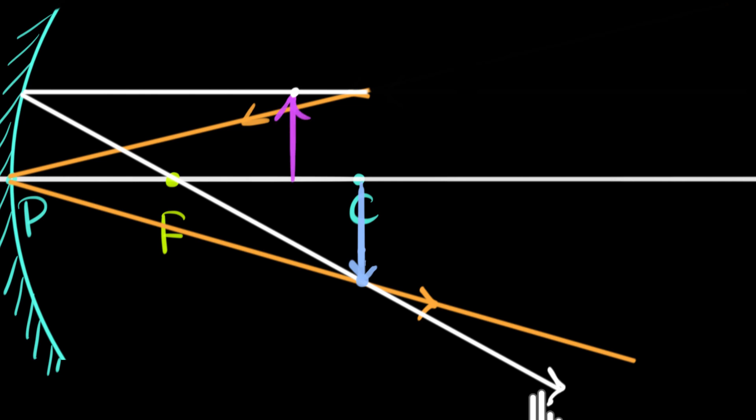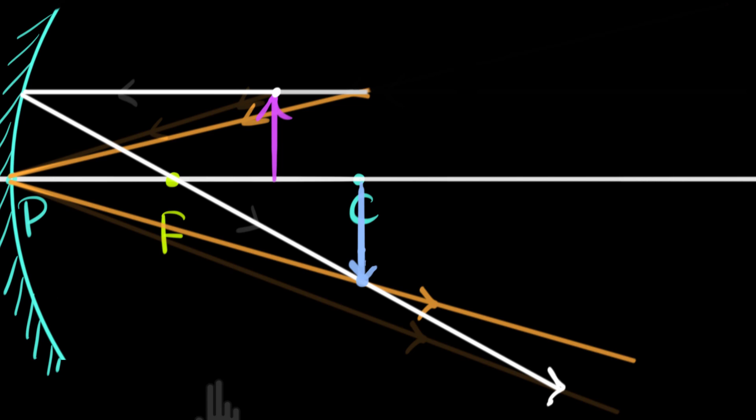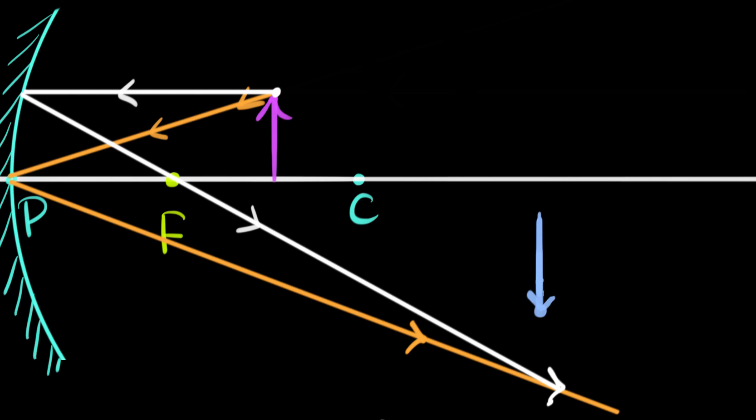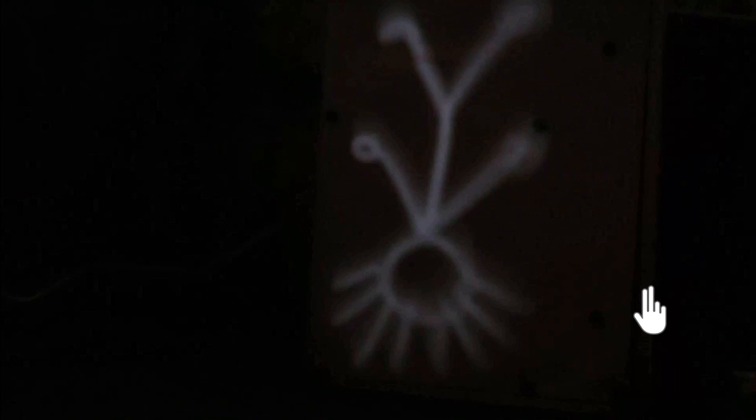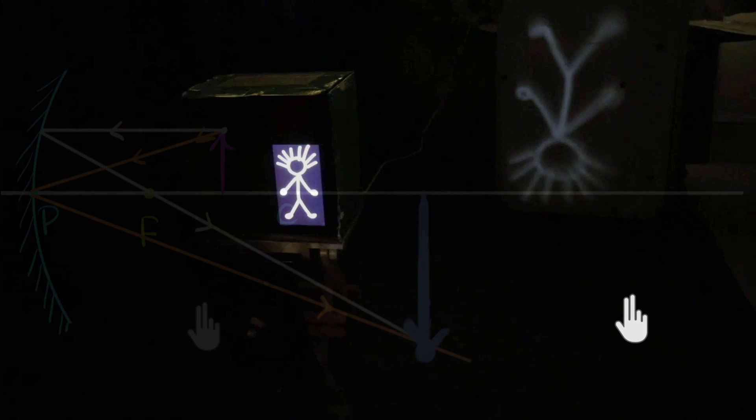Let's bring the object even closer, placing it between F and C. Drawing the ray diagram, all the reflected rays intersect somewhere beyond C. So the image will be beyond C and humongous in size. In the physical setup, with the object between F and C, the screen has to be placed far behind the mirror. Dimming the lights reveals a beautiful magnified, inverted image. The closer you bring the object, the farther and bigger the image becomes.